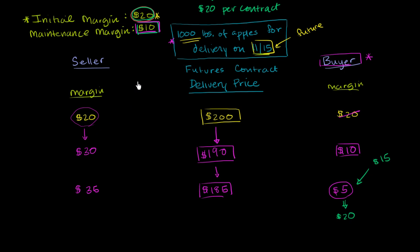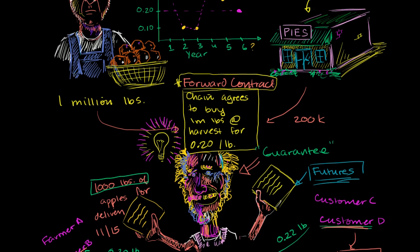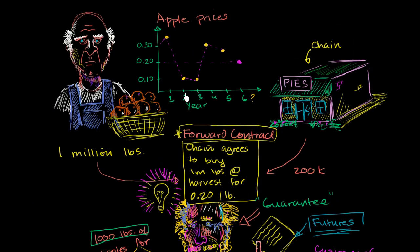Let's verify that the margin mechanics and the marking to market of the futures contract actually gets both the seller and the buyer what they originally wanted, which is that they don't have to be susceptible to the volatility in apple prices. They both wanted to effectively sell the apples for $0.20 a pound or buy the apples for $0.20 a pound. And they didn't want to, in the farmer's case, go out of business if they could only sell the apples for $0.10 a pound, or in the pie company's case, go out of business if they had to buy the apples for $0.30 a pound.